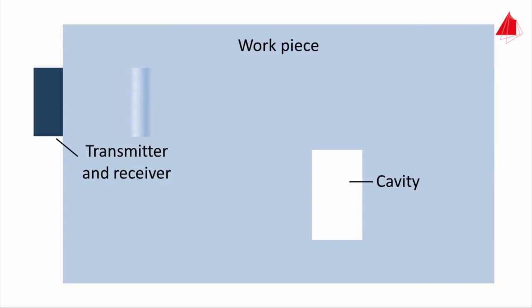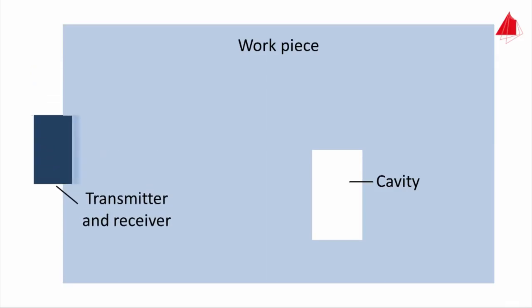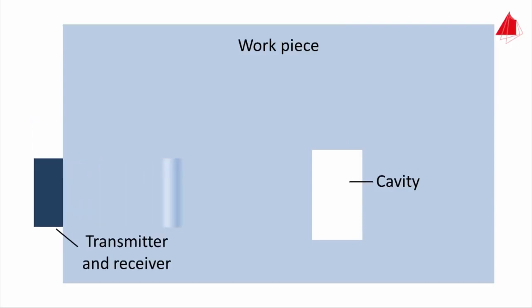When the transmitter is moved a little downwards, the cavity reflects a part of the wave. That part arrives earlier at the transmitter than the rest of the sound wave. Even further downwards, the cavity reflects the complete ultrasonic pulse.